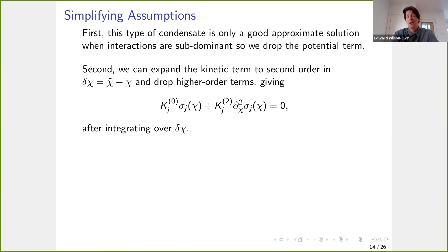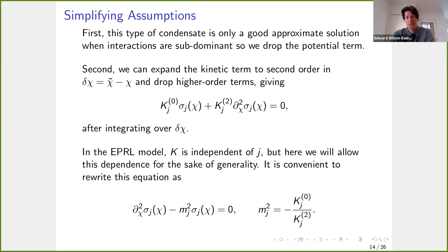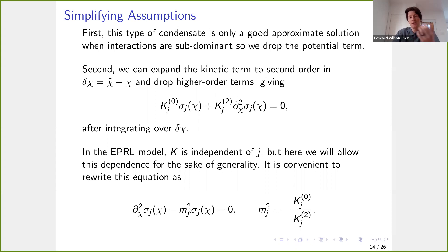We can expand the kinetic term in a derivative expansion, getting a term with no derivatives and a term with a quadratic derivative, neglecting higher-order terms. We can rewrite the equation of motion, and depending on the GFT action, that tells us what the M_j term is. The key thing to remember is that our condensate wave function must satisfy this equation, and the M_j squared term comes from the parameters in the GFT action. Once you tell me your GFT action, that tells you what M_j is.